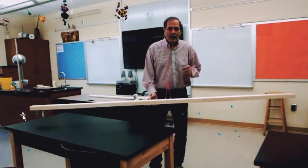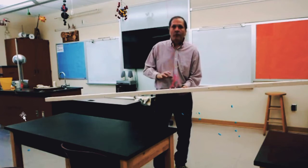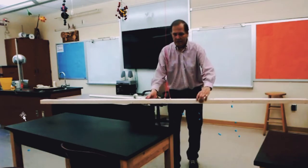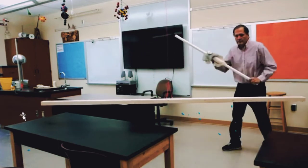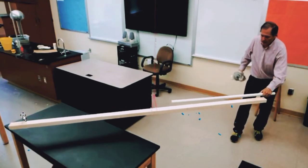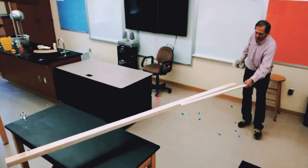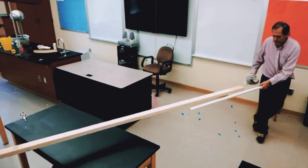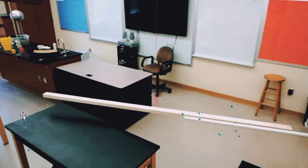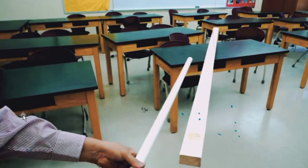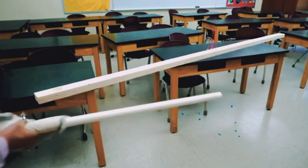Now one more interesting demonstration. We have a long wooden plank suspended by a thread — initially it has no charge. I am going to take a PVC pipe that has been rubbed with wool. When I bring this charged PVC pipe near it, the wooden plank is getting attracted! The reason is the same as with the balloon: polarization takes place. The PVC pipe is negatively charged, so the wooden plank is attracted by the charged PVC pipe.